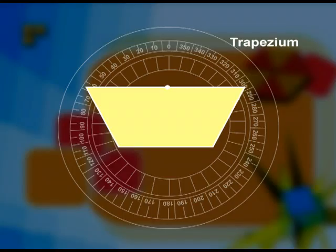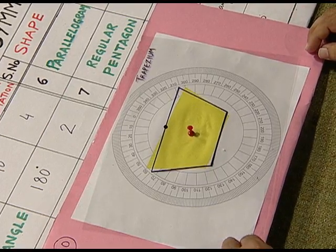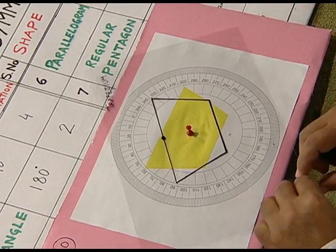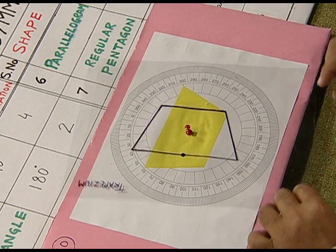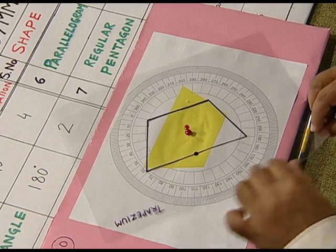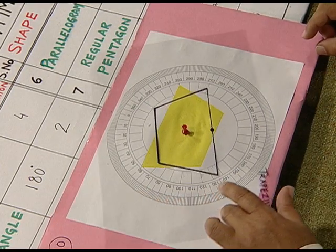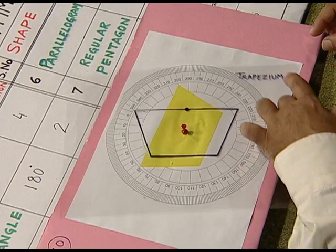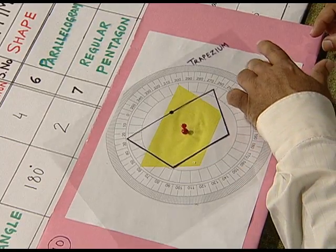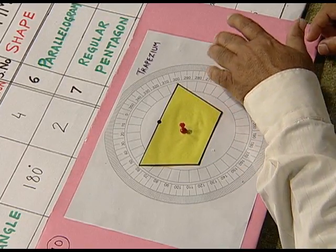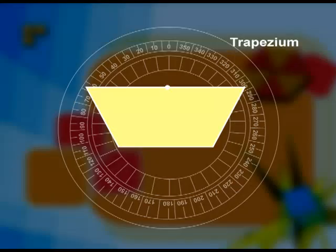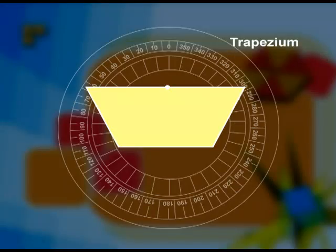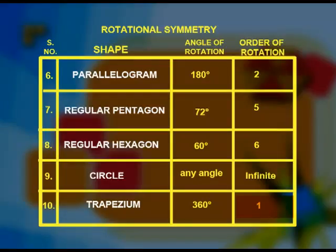Finally, we take the example of a trapezium. On rotating the trapezium, we find that nowhere does it take the same shape. Only after a complete rotation of 360 degrees does it come back to its original position. Therefore, for a trapezium the order of rotation is 1 and the angle of rotation is 360 degrees.